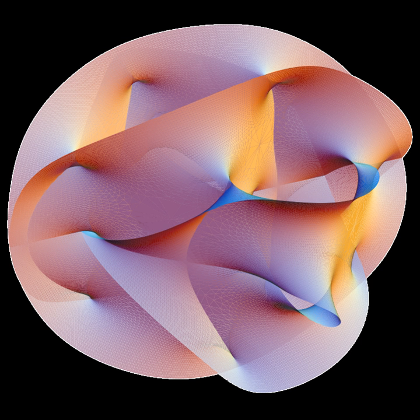Although bosonic string theory has many attractive features, it falls short as a viable physical model in two significant areas. First, it predicts only the existence of bosons whereas many physical particles are fermions.